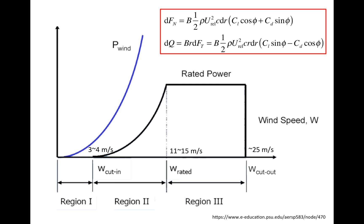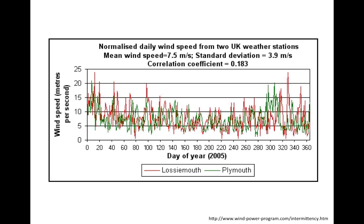Third, when the wind speed reaches the cut-out speed W cut-out, which is around 25 meters per second for a typical large turbine, the entire turbine is shut down. This is to protect the mechanical structure of the turbine, as at such high wind speed the mechanical stress could be really damaging. The power curve alone cannot tell us how much energy is generated per year, which is often called the annual energy production, or AEP.